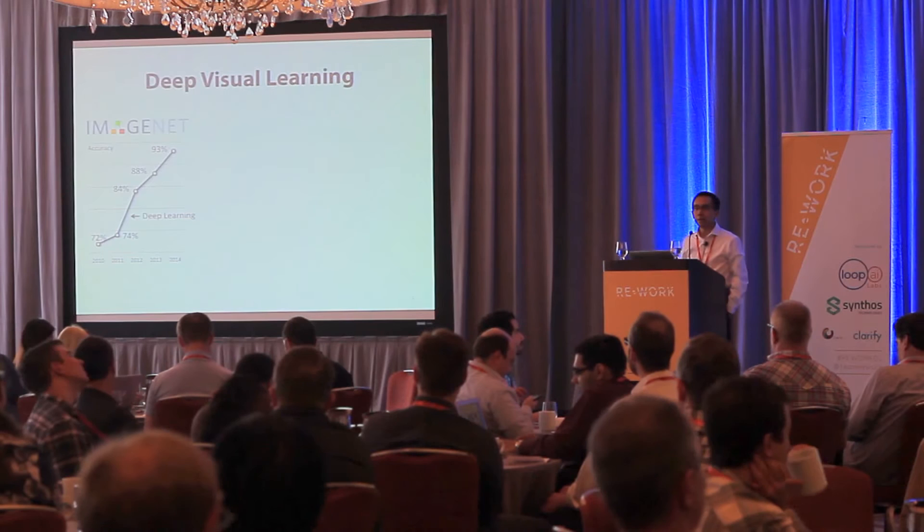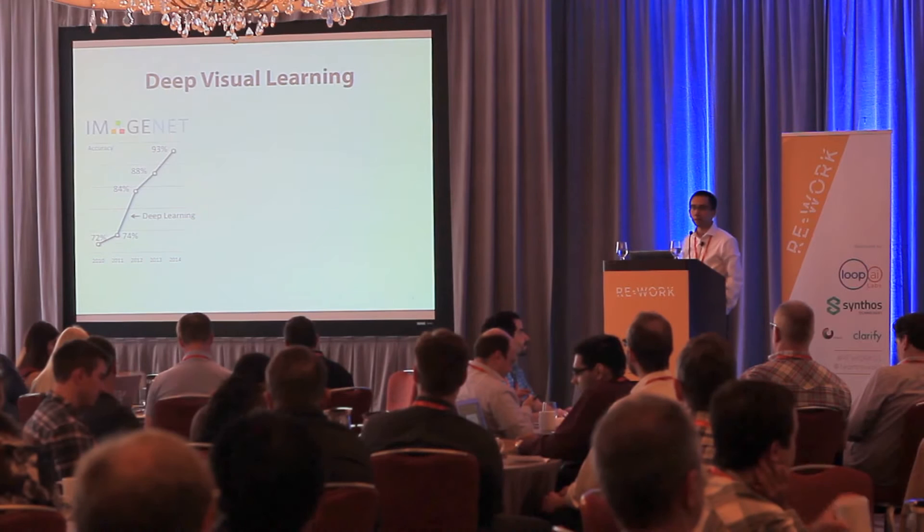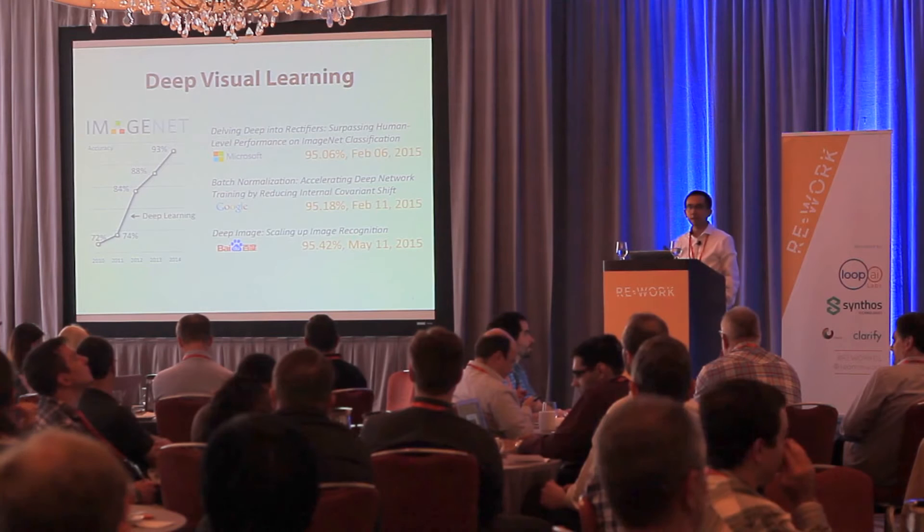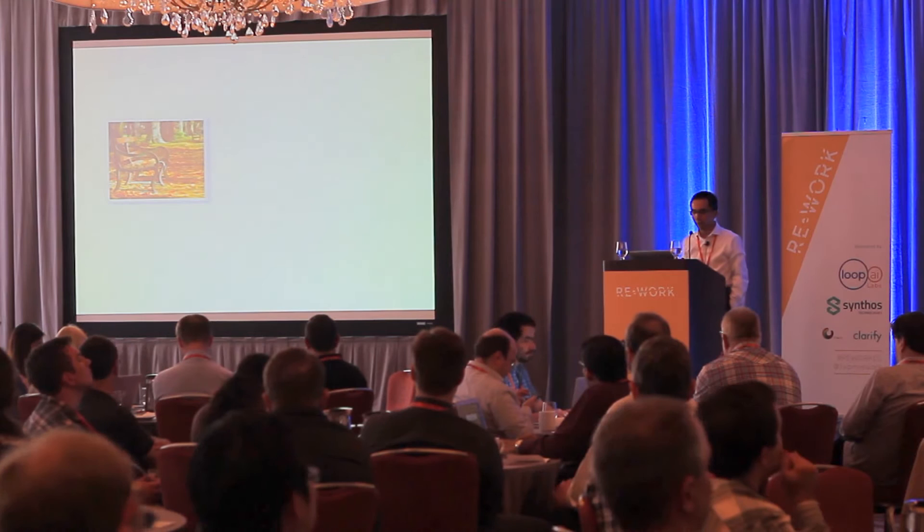As we know, deep learning has enabled a lot of breakthroughs in computer vision. For example, deep learning enabled discontinuous improvements in 2D object classification on ImageNet. Big companies like Baidu, Yahoo, Microsoft, and Google are still making more progress, and we're basically about to solve these problems.